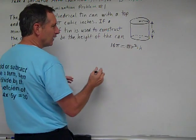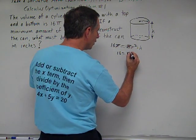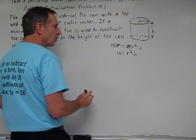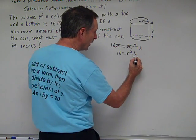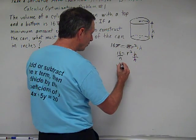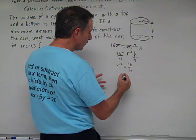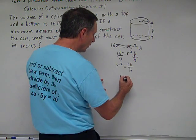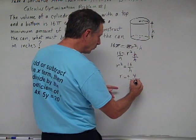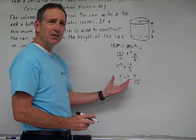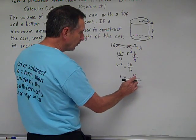The π cancels from both sides, giving us 16 = r²h. We'll solve for r². Dividing both sides by h, r² = 16/h. Taking the square root of both sides gives r = ±4/√h. Since we can't have a negative radius for a geometric shape, our radius is r = 4/√h.